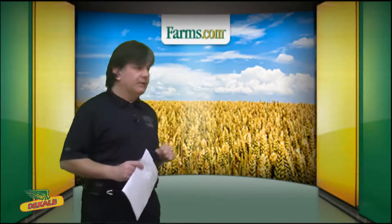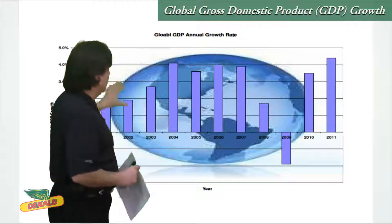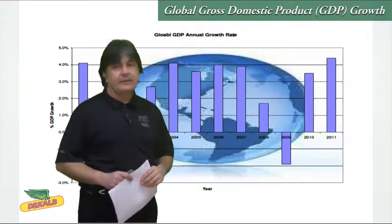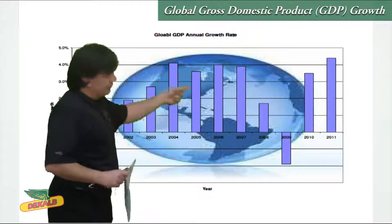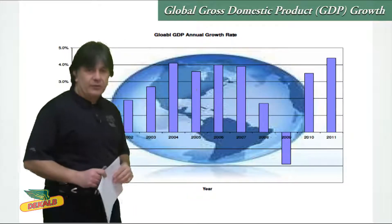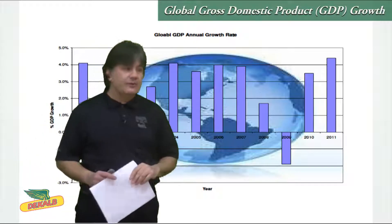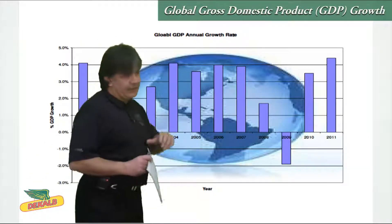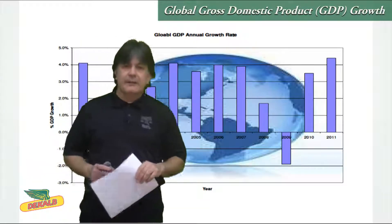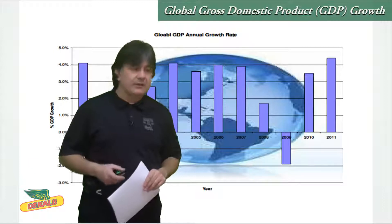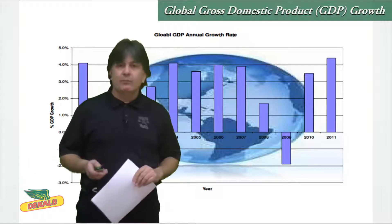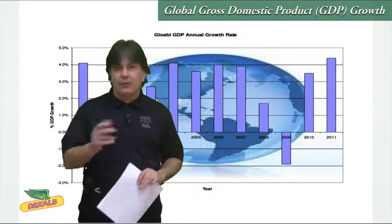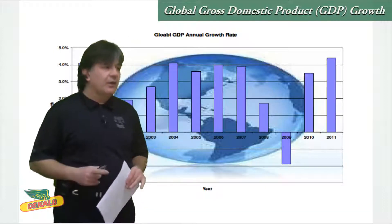A prime example is global GDP. In the last 10 years, you can see from this chart the average growth was 2.8%, and in 2009 we had a little bit of a dip — that was the only exception, down about 1.9% — but overall, still positive growth.